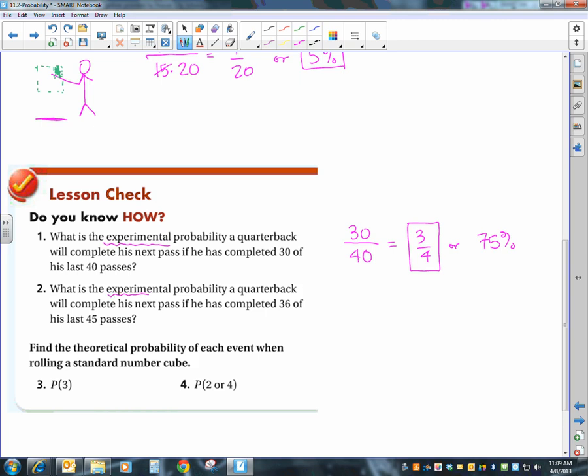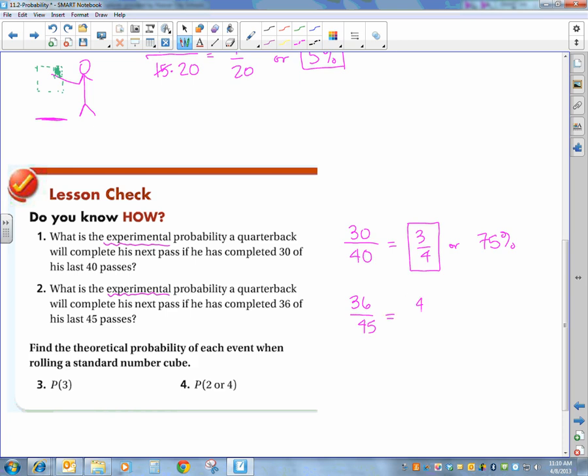Again, experimental probability. So he completed 36 of his passes out of 45 and that reduces to 4 out of 5 or 80%.